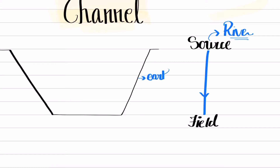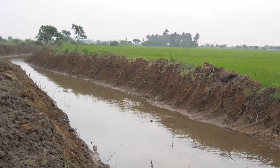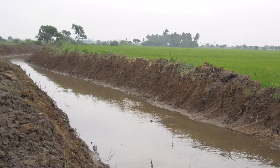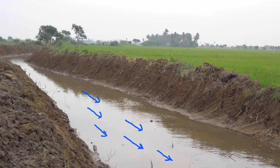This irrigation canal is generally made up of earthen soil. An example can be seen in the image here — you can see that this is an earthen canal section whose side slopes as well as the bed are made up of soil. You can see that water is flowing in this earthen channel, being transferred from the source to the field under the action of gravity. Since the water is moving, it will be moving with a certain velocity.